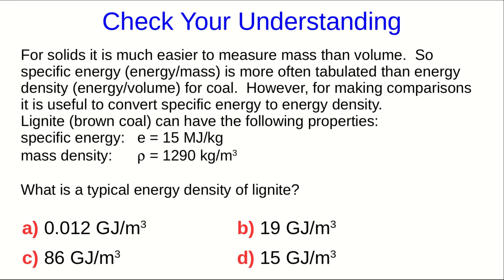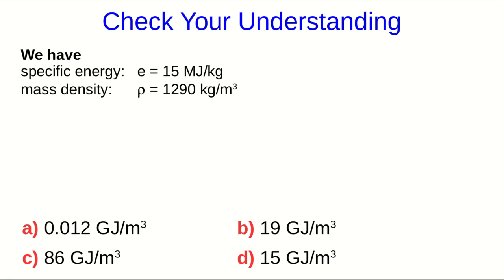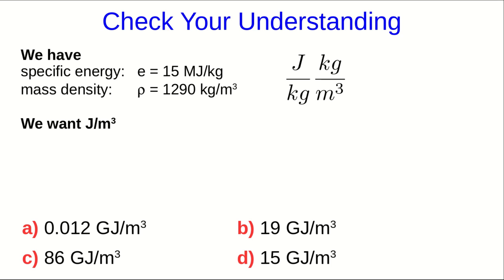Here is the question that was asked at the end of the previous part of this lecture. This essentially just comes down to unit analysis. We have a specific energy in joules per kilogram, and a mass density in kilograms per meter cubed. We want something in joules per meter cubed. If you think about how the units must combine, we multiply the specific energy by the mass density, the kilograms cancel out, and we get an answer in joules per meter cubed.